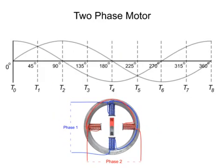The two sinusoidal waves are 90 degrees out of phase. This phase discrepancy is the key to creating rotation of the rotor.